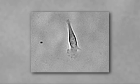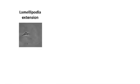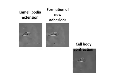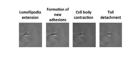Cell migration may be divided into four mechanically separate steps: holopodial extension, formation of new adhesions, cell body contraction, and lastly tail detachment.